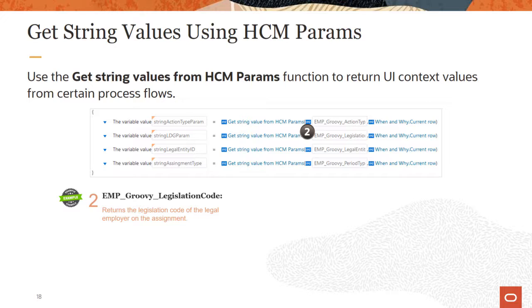Emp Groovy legislation code returns the legislation code of the legal employer on the assignment. This returns the legal entity id of the legal employer on the assignment, such as 202 for the vision corporation. Emp Groovy period type returns the period type from the worker's work relationship, for example e for employee.